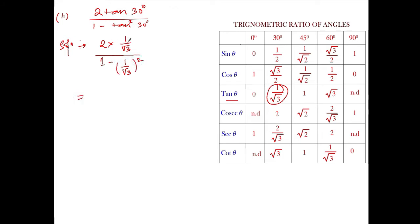Now, 2 into 1 by root 3, it will be 2 divided by root 3, whole divided by 1 minus 1 square, it is 1, root 3 square. Root 3 square, square and root cancel, so it will be 3. So let me write down root 3 square here and calculate further. 2 divided by root 3, write down as it is, 1 minus 1 by 3.